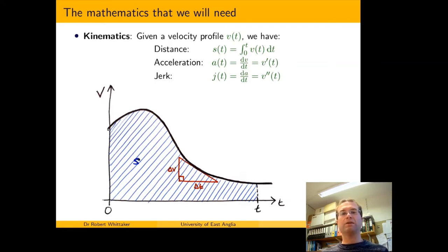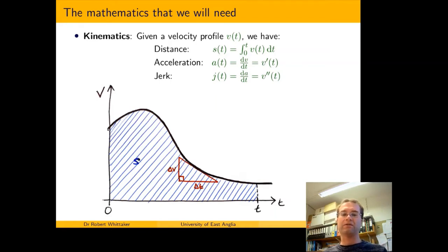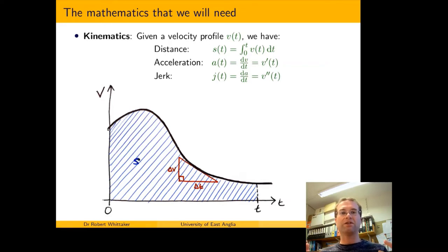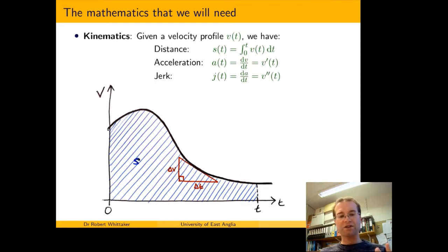There's another quantity we'll be interested in called the jerk, defined as the rate of change of acceleration with respect to time. Starting from velocity, one derivative gives acceleration, and another derivative gives the jerk. It's called the jerk because it's what you experience when acceleration changes — if you're in a car and suddenly turn a corner there's acceleration and you get jerked outwards, or if the car is stationary and you put your foot down you feel thrown back in your seat. That change in acceleration is experienced as jerkiness.